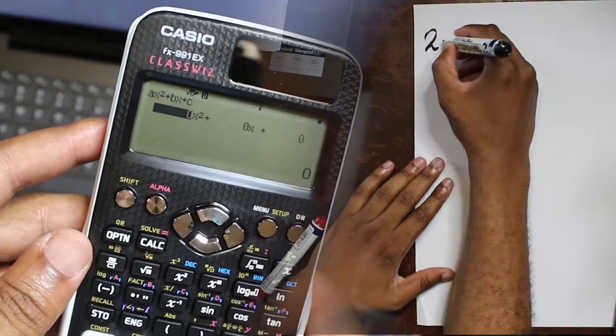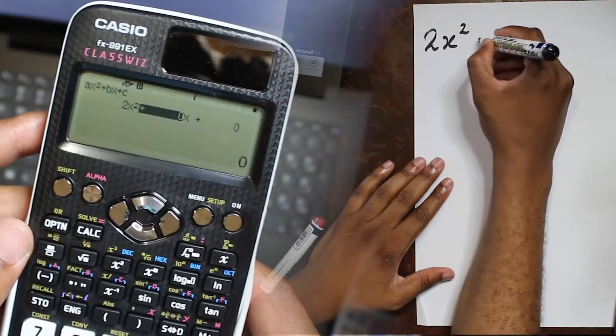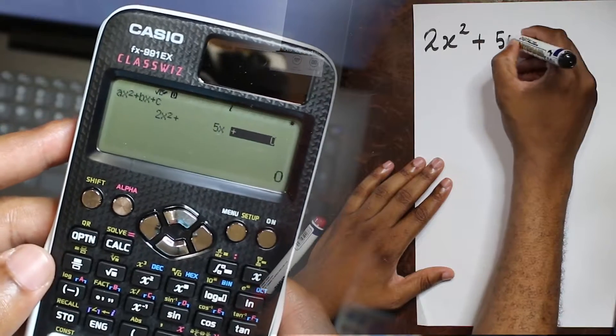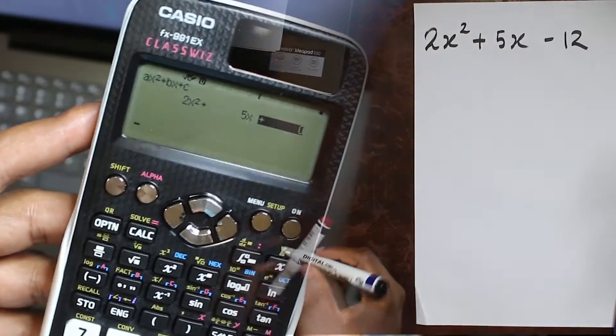Let's say the quadratic was 2x squared plus 5x. I'm just putting in the coefficients. This is negative 12.